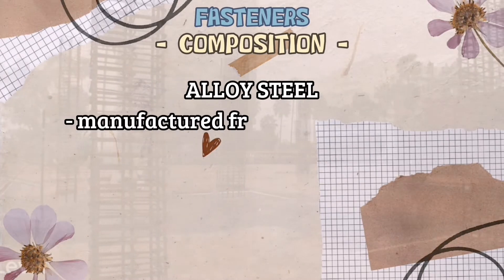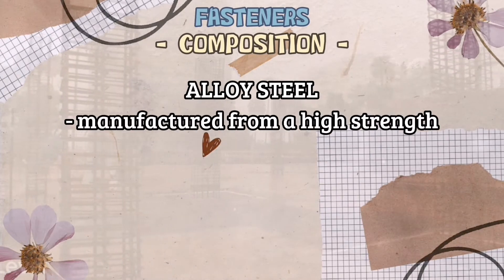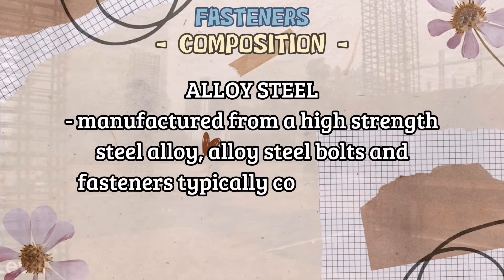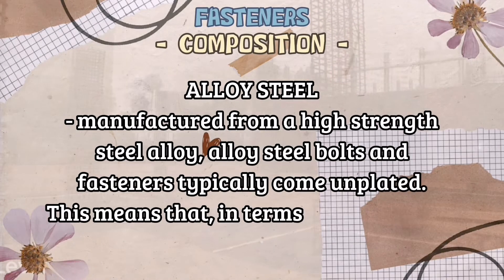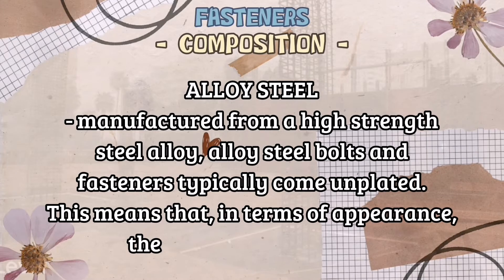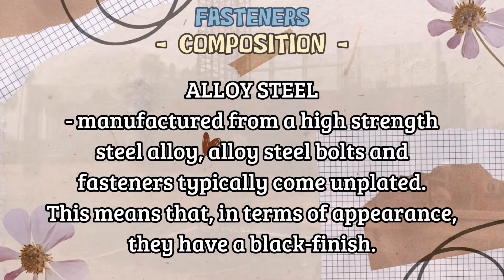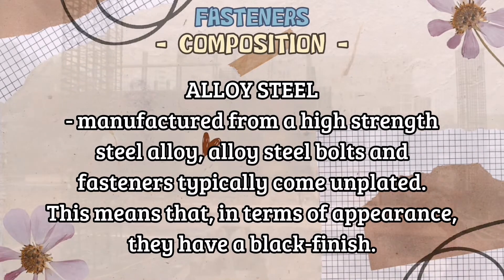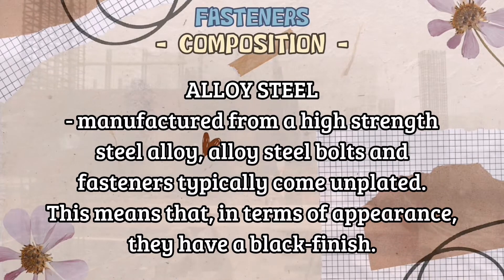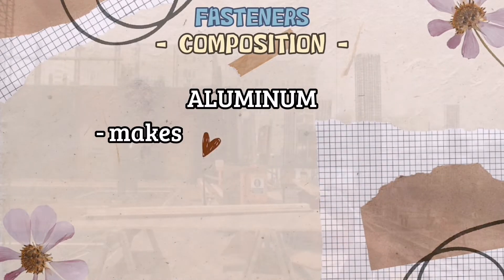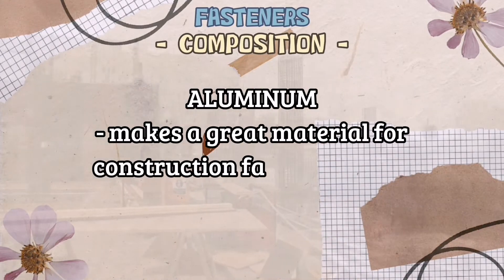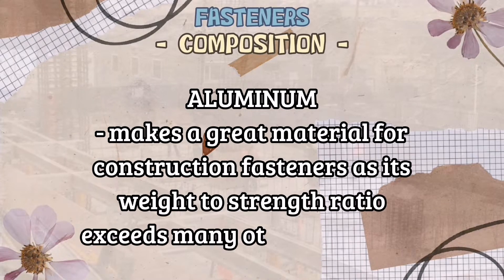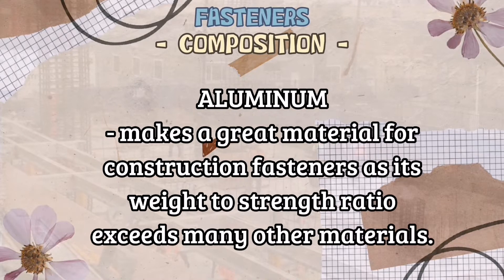Alloy steel, manufactured from a high-strength steel alloy, alloy steel bolts and fasteners typically come unplated. This means that in terms of appearance, they have a black finish, and while they're extremely strong, they can be brittle. Aluminum makes a great material for construction fasteners as its weight-to-strength ratio exceeds many other materials.